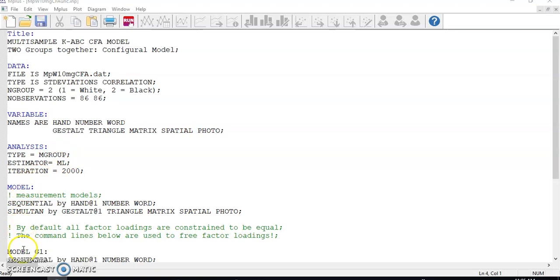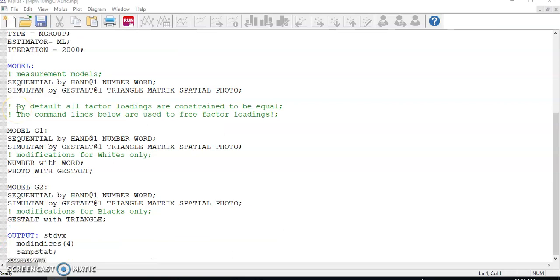Things got a bit complicated in the model section. Please remember that when running multi-group comparisons, by default, Mplus assumes that the estimated factor loadings are equal across all groups. In order to have an unconstrained model, we have to set the factor loadings free. To do this, in the model section, you first specify the CFA structure and clearly label your reference variables by adding @1 following the name of the reference variables. For sequential processing, hand is the reference variable and I write hand@1. For simultaneous processing, gestalt is the reference variable and I write gestalt@1.